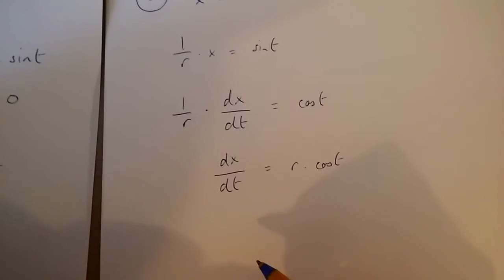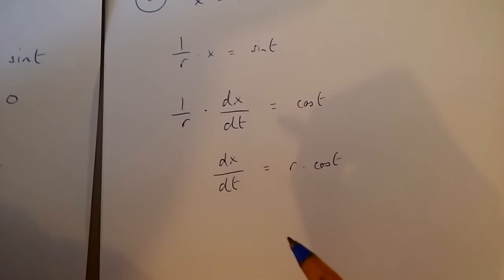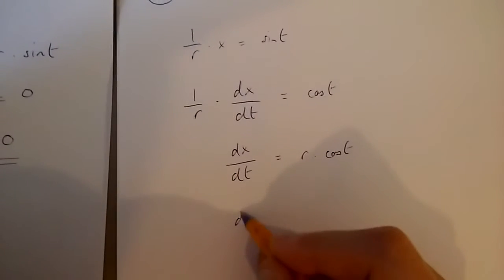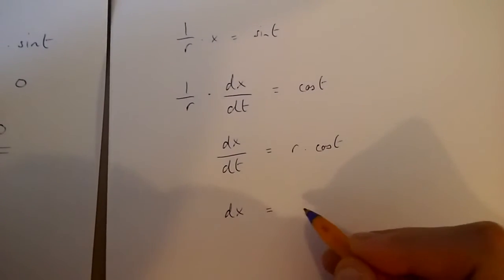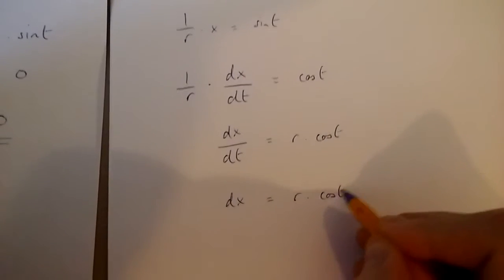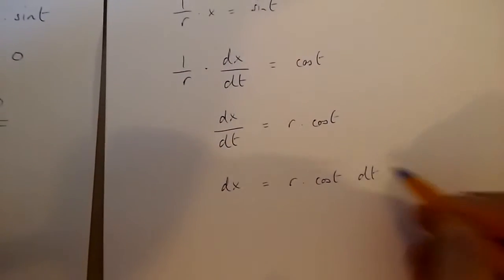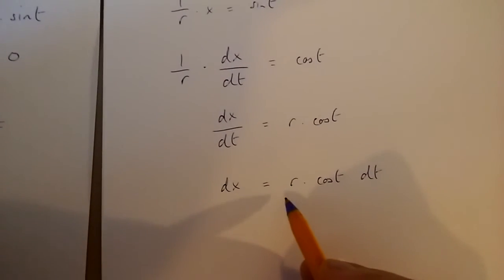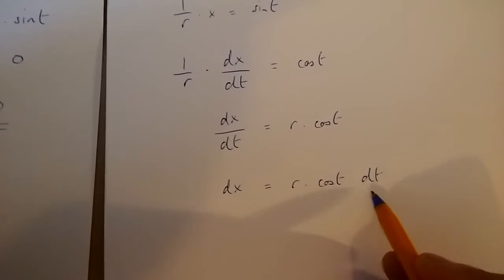And now, if I multiply both sides of this equation by dt, I get dx is equal to r times cos t times dt. And this is what is going to replace dx in the original equation.